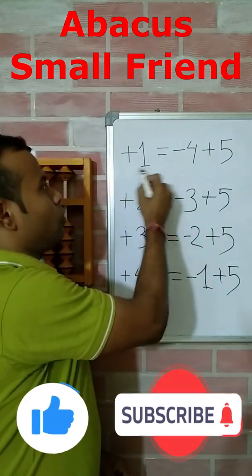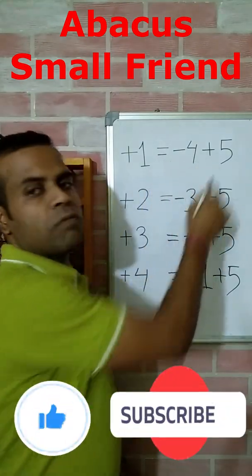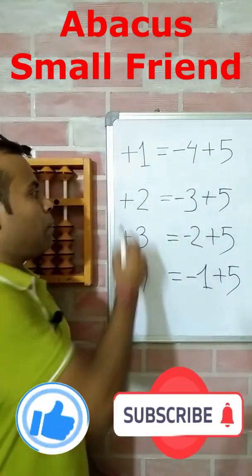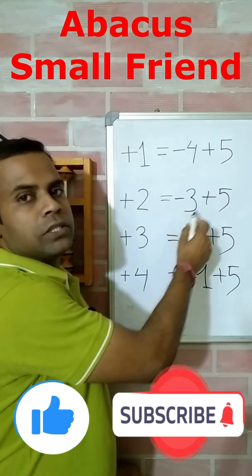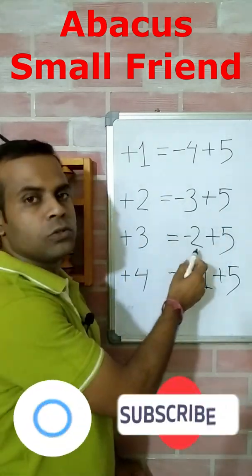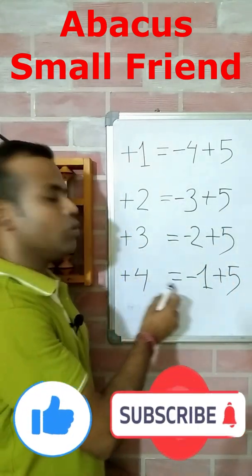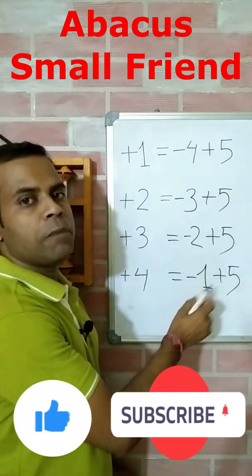So the formulas are: plus one equals minus four plus five; plus two equals minus three plus five; plus three equals minus two plus five; and plus four equals minus one plus five.